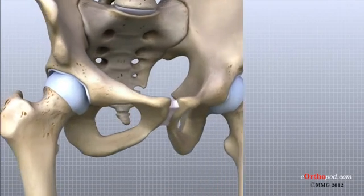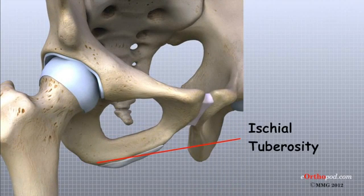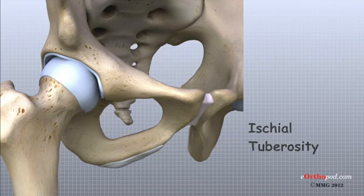A third bursa covers the ischial tuberosity, the bump of bone in your buttocks that you sit on, and again, inflammation of this bursa is called ischial bursitis.